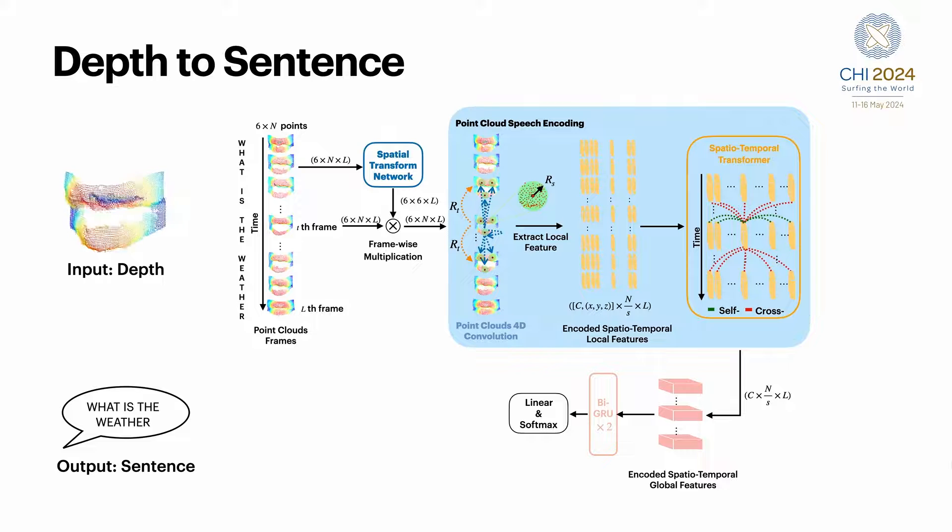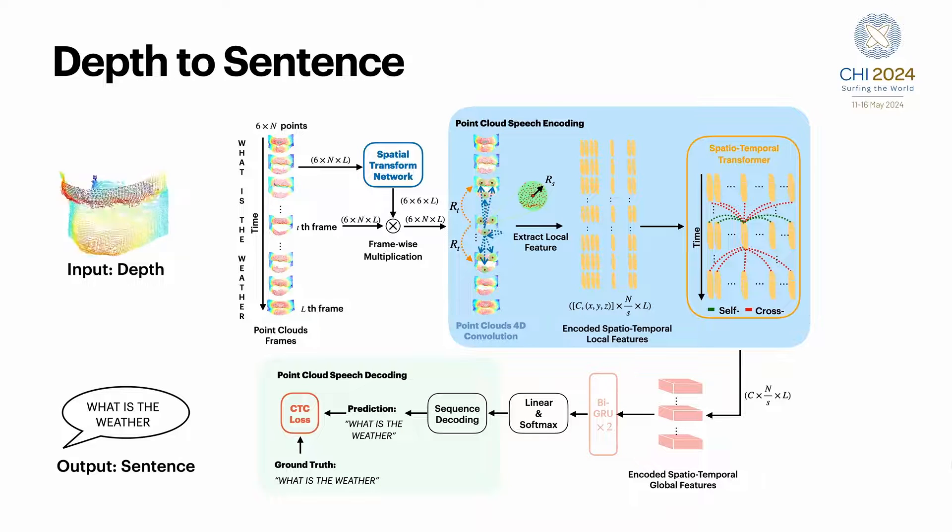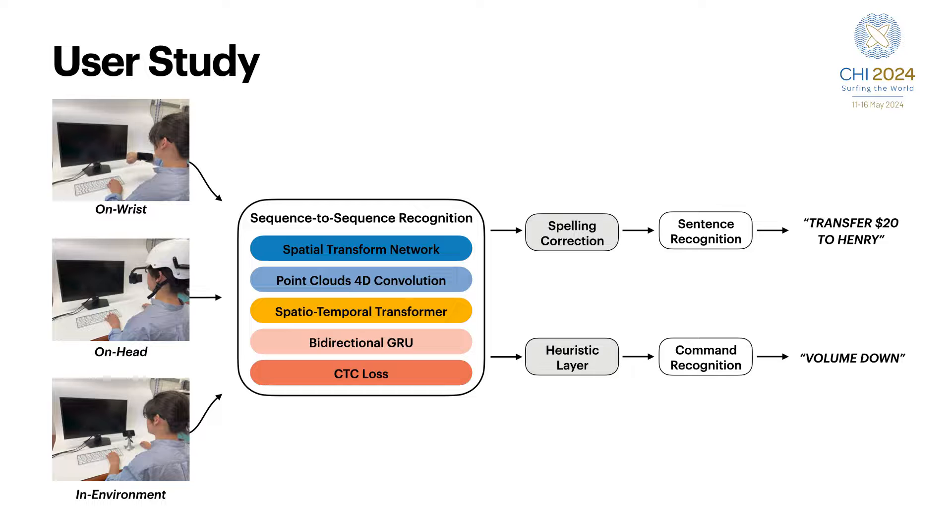In the training phase, we utilize CTC loss to align the point cloud frame and English characters. After that, we use a pipeline for both sentence recognition and command detection. For command detection, we add a heuristic layer at the end to map recognized speech to one of the commands in the command set.